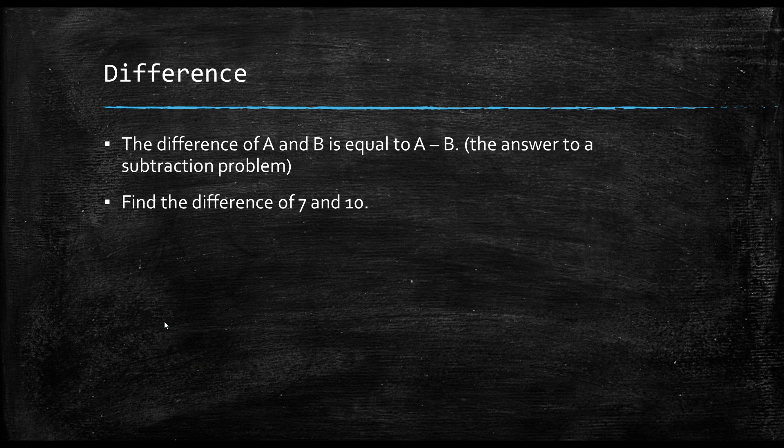A difference is another term you need to know. The difference of a and b is equal to a minus b, or the answer to a subtraction problem. Find the difference of 7 and 10. So, this is just equal to 7 minus 10, which is equal to negative 3. So, negative 3 is the difference of 7 and 10.